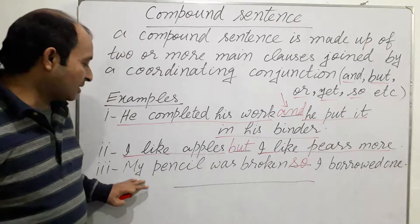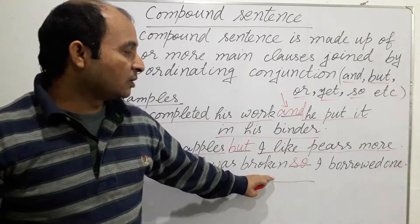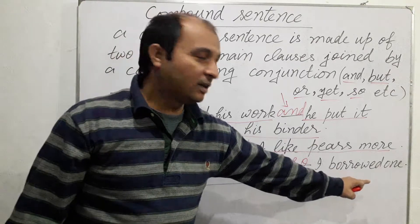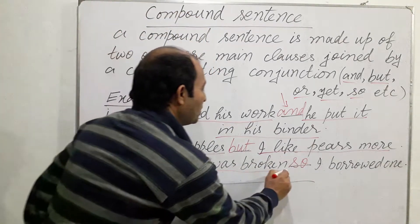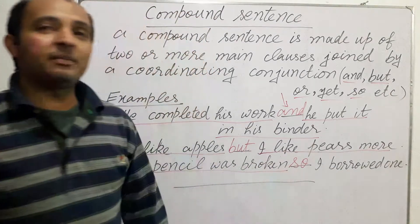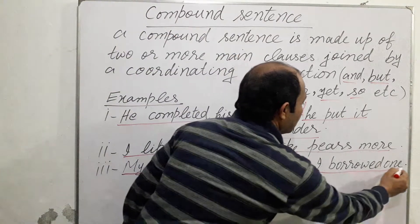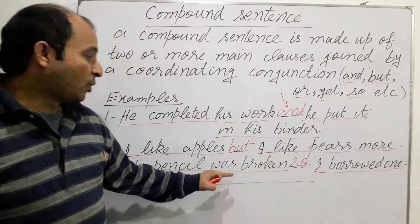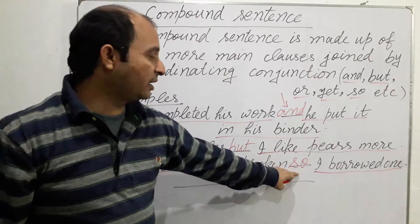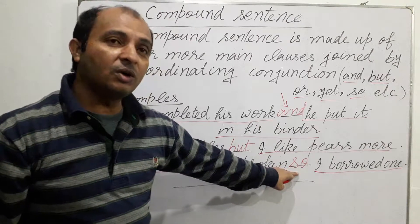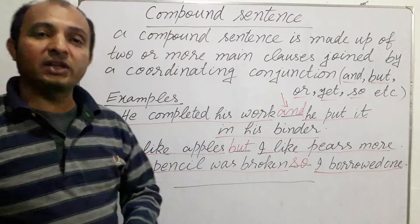Let us take another example: 'My pencil was broken, so I borrowed one.' 'My pencil was broken' is a main clause, and 'I borrowed one' is also a main clause. Both main clauses are joined with the coordinating conjunction 'so', making this a compound sentence.